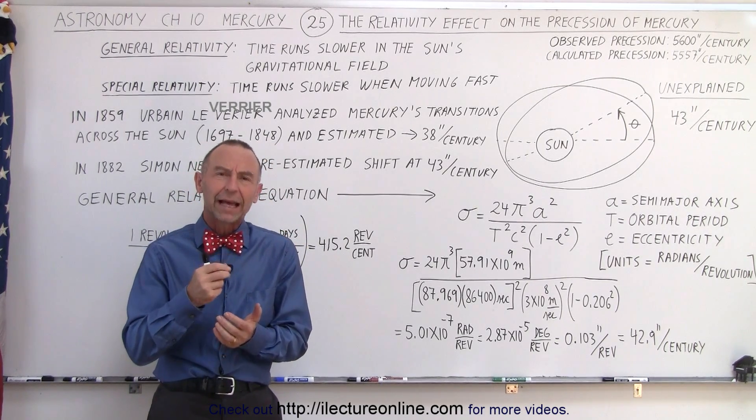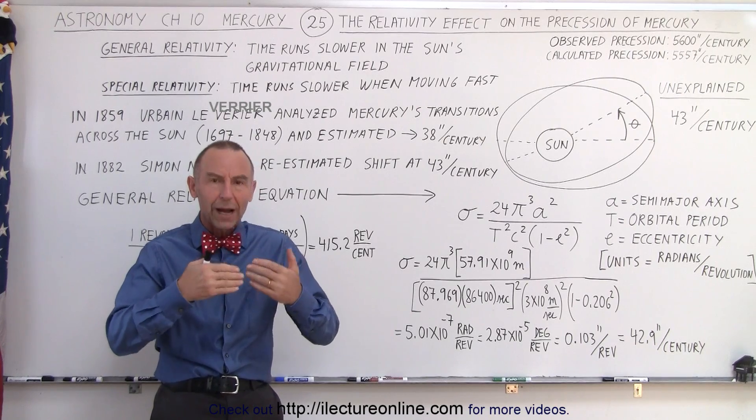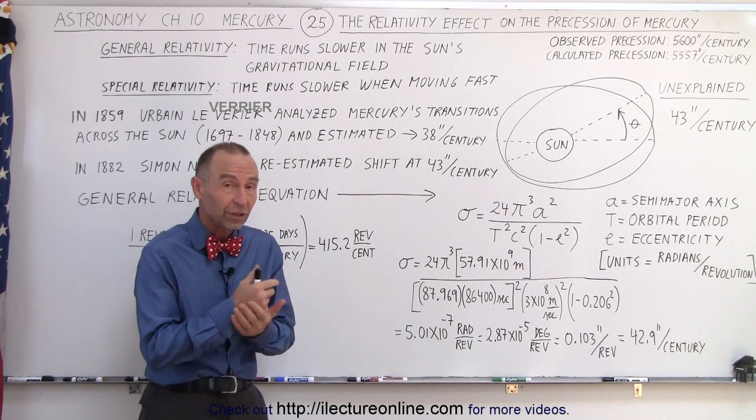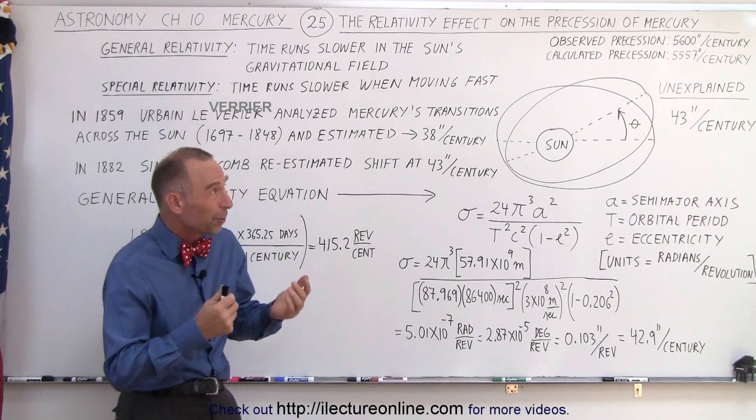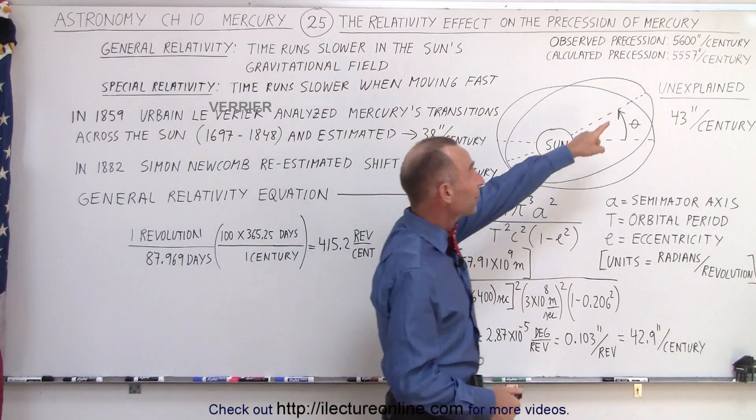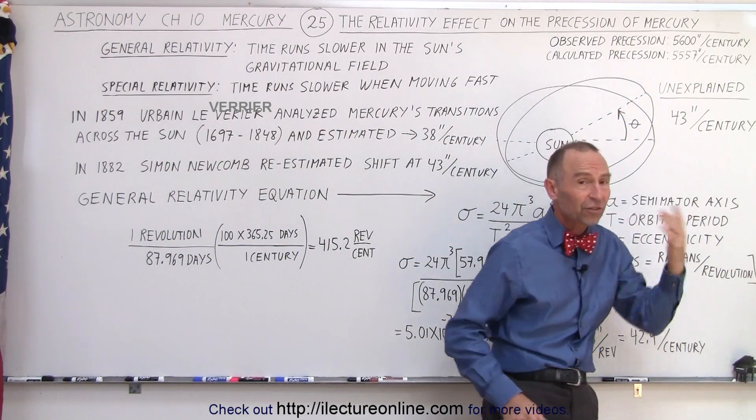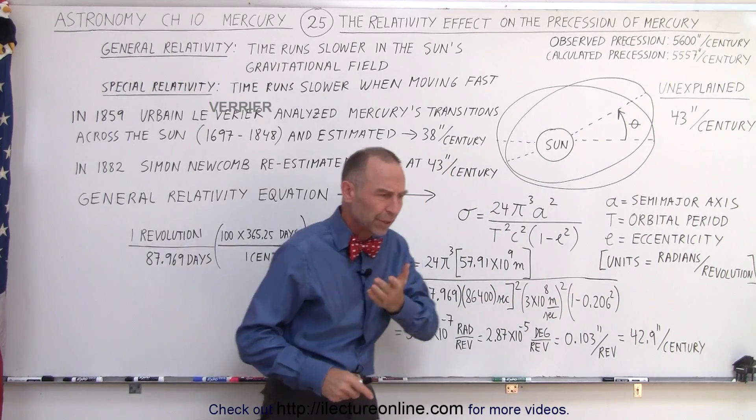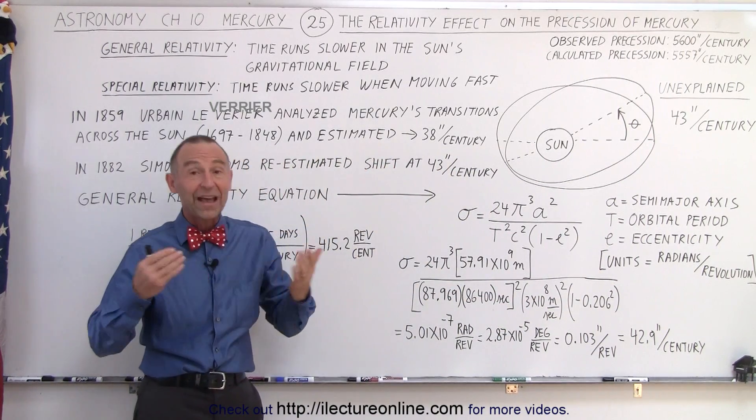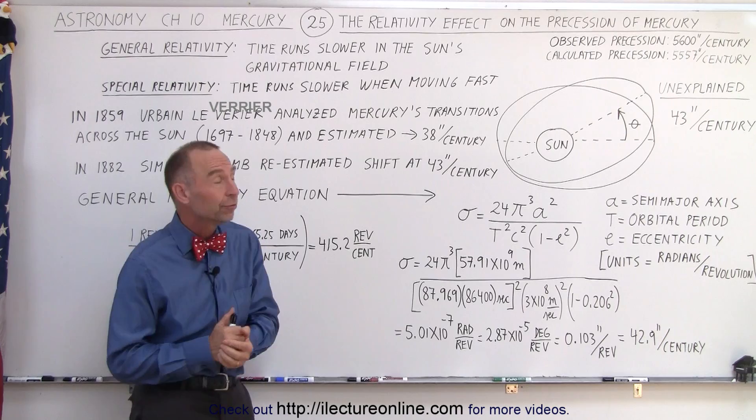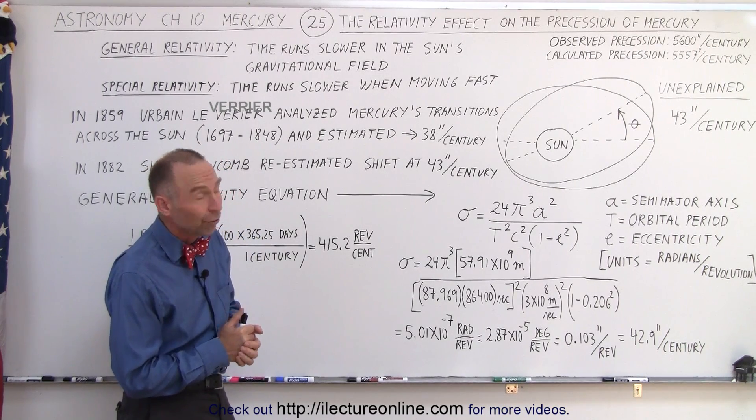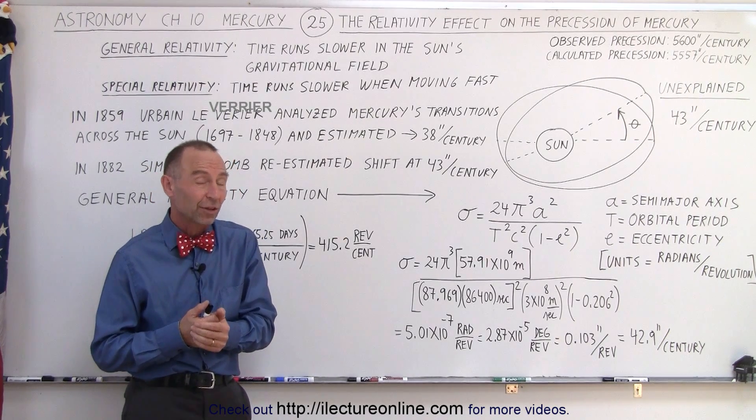But when they tried to verify that and analyze why the precession was such using the laws of Newton, the number they came up with was 5,557 arc seconds per century. It appeared that Mercury was precessing faster than it was supposed to be under the known laws of Newton. The difference: 43 arc seconds per century.